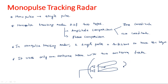When these two signals come back from the target, the output is given to the antenna plate, which collects the information so that tracking can be done. It gives two measurements: a sum signal and a difference signal.